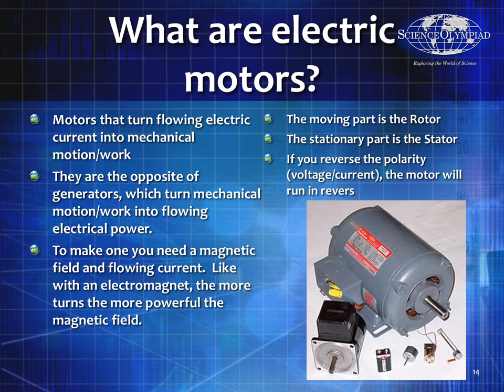An electric motor takes the magnetic force created — Q times V cross B — and turns that into mechanical work. By providing some current, and these things usually have thousands of turns and iron cores, they create massive amounts of magnetic energy which then creates magnetic force and they spin. So they turn that electrical power into mechanical motion or work.